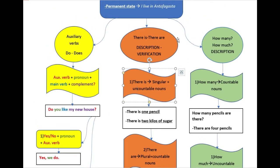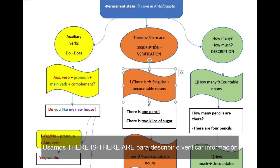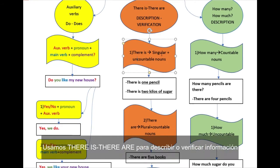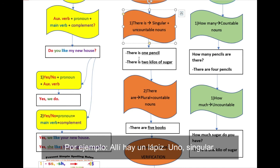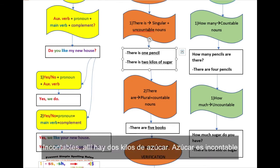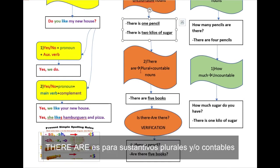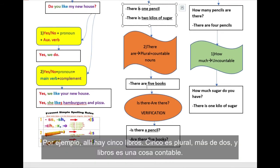There is and there are. We use there is and there are for description and verification. There is is for singular, uncountable nouns. For example, singular noun. There is one pencil. One. Singular. Uncountable nouns. There is two kilos of sugar. Uncountable noun. Sugar. There are. We use there are for plural, countable nouns. For example, there are five books. You can count the books and it's plural. It's more than two.